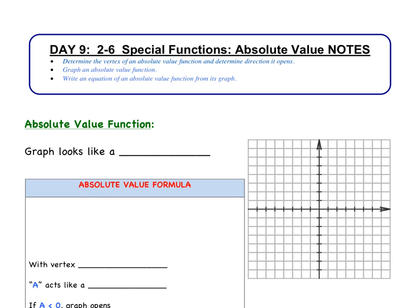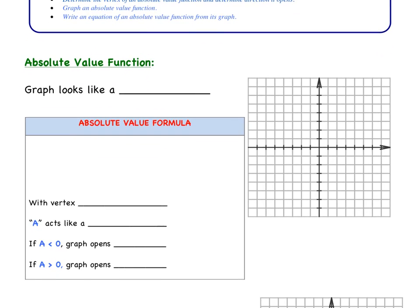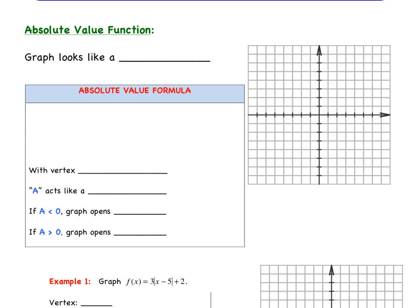Let's begin. An absolute value function — if you remember anything about this, you should recall that the graph looks like a V. So if we were to graph Y equals the absolute value of X, our vertex is at (0, 0), with one side going up to the right and the other going up to the left.